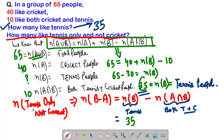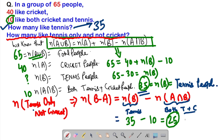Putting in the values: 35 minus 10 equals 25. So 25 is our answer for the second part — the number of people who like tennis only and not cricket. Here we have solved this question of set theory.